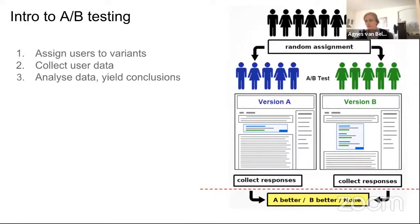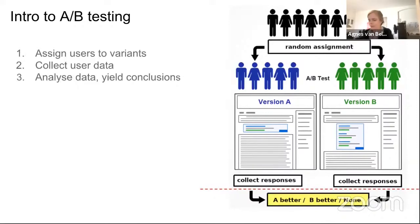This talk will mainly concern itself with the last part of the A/B testing process — specifically the analysis and statistical work illustrated below the red dotted line in the diagram.